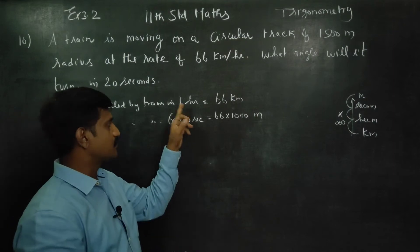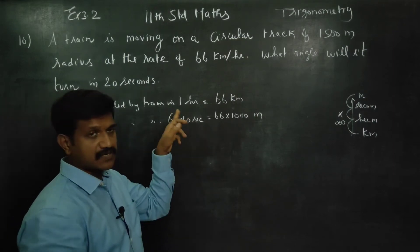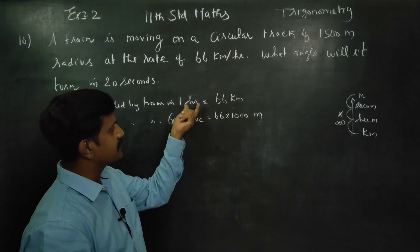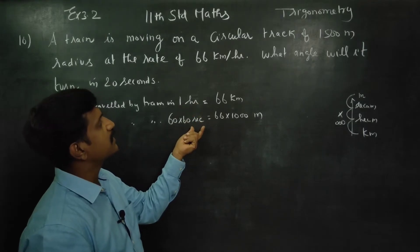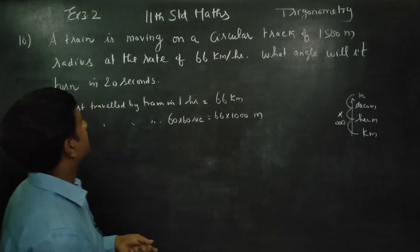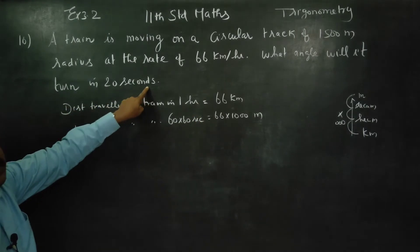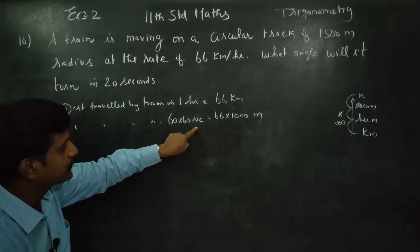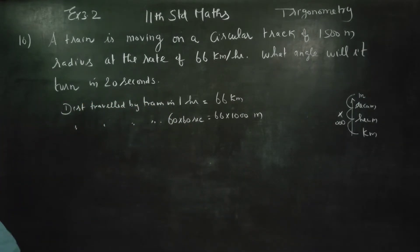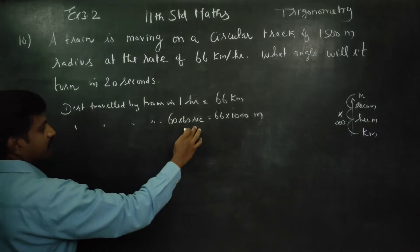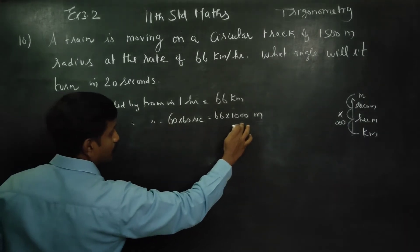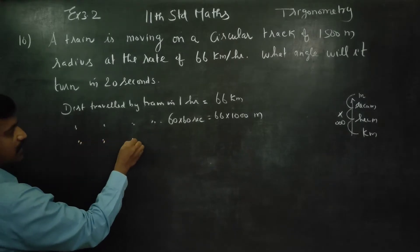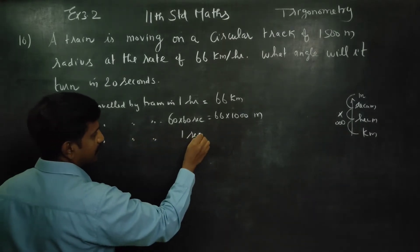1 hour is equal to 60 minutes, and 60 minutes is equal to 60 into 60 seconds, which gives us 3600 seconds. So 20 seconds is equal to 20 seconds. That's why 1 hour equals 3600 seconds. Distance traveled by the train in 1 second.